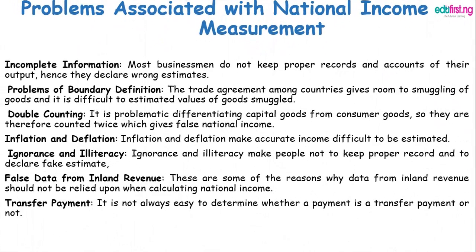Problems associated with national income measurement: 1. Incomplete information. 2. Problem of boundary. 3. Double counting. 4. Inflation and deflation. 5. Ignorance and illiteracy. 6. False data from inland revenue. 7. Transfer payment.